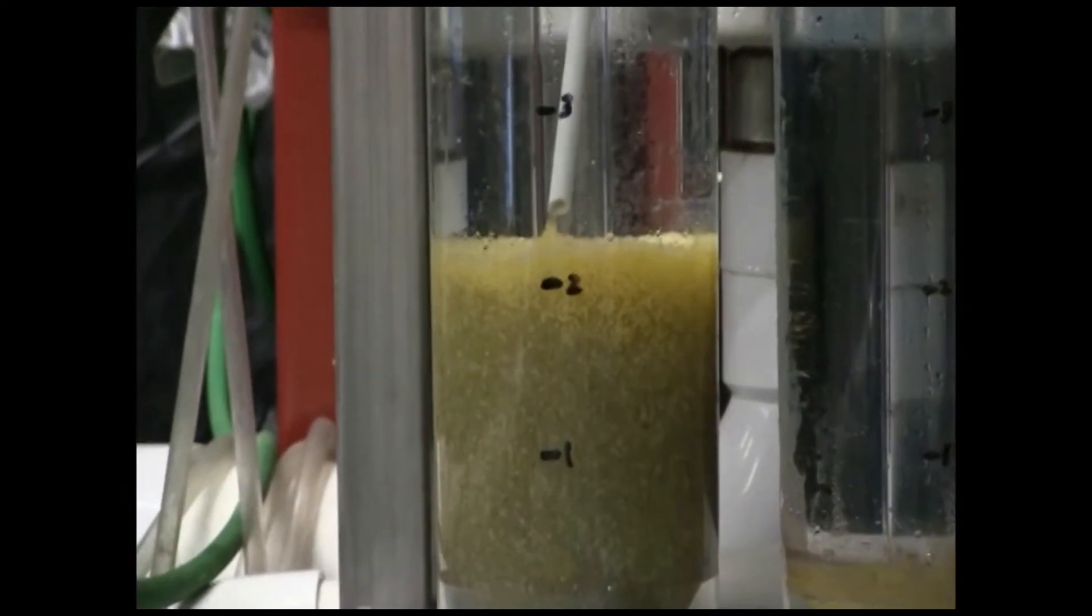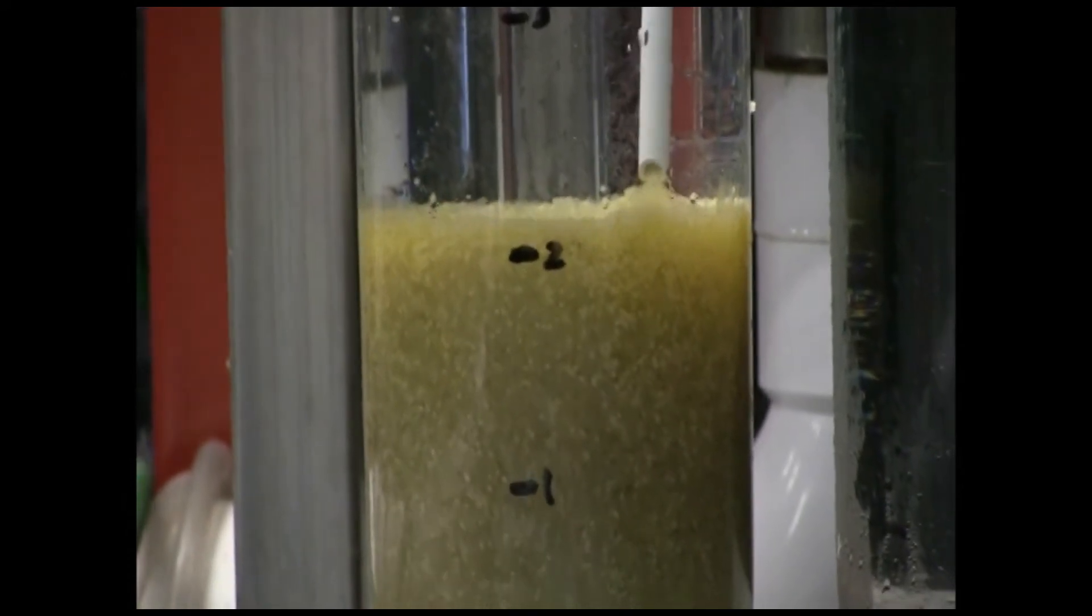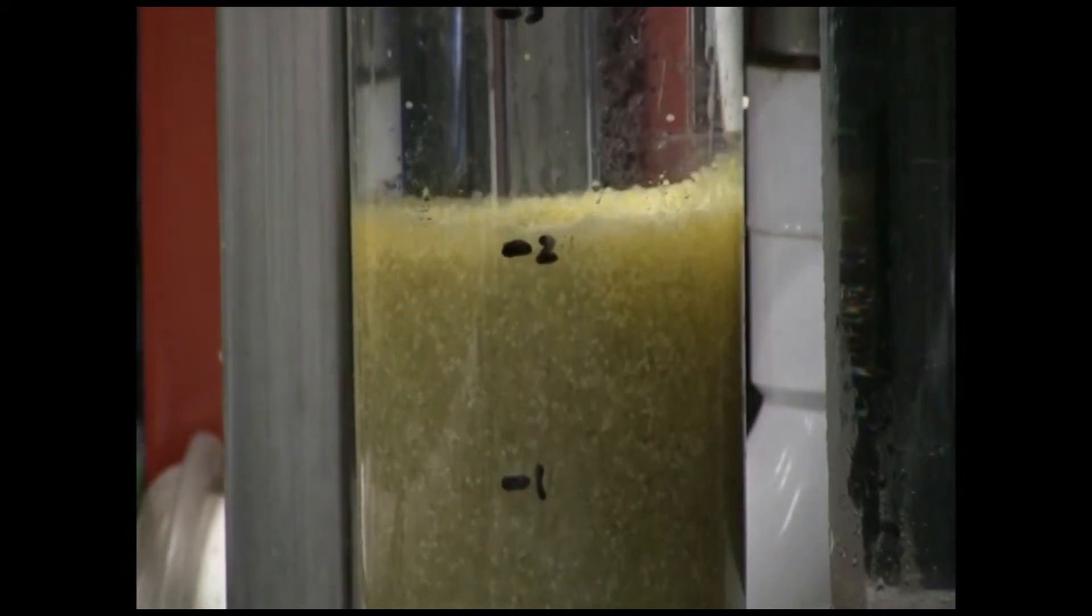Dead eggs are white in color and more buoyant than live eggs. Therefore, they collect atop live eggs and can be easily siphoned off and collected in a container.